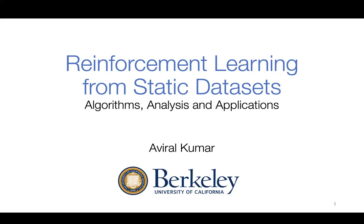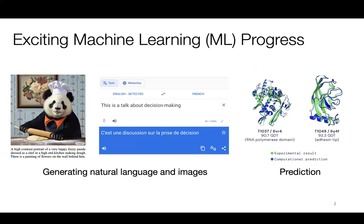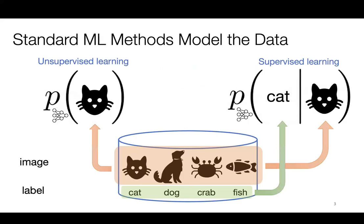I'll talk about reinforcement learning from static datasets — some algorithms, some analysis, and some applications. Broadly, there's been a lot of exciting progress in machine learning recently. We have these amazing generative models that can generate language and images phenomenally well, and also models that can make predictions about complex objects such as protein structures really well. If you look at what enables this progress, it has been the standard machine learning paradigms of supervised and unsupervised learning.